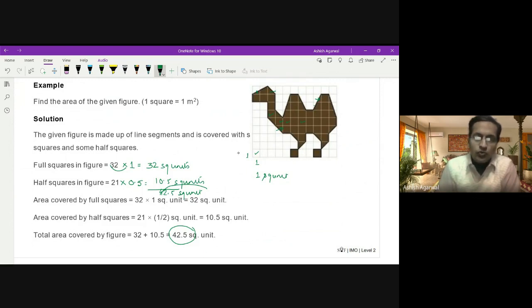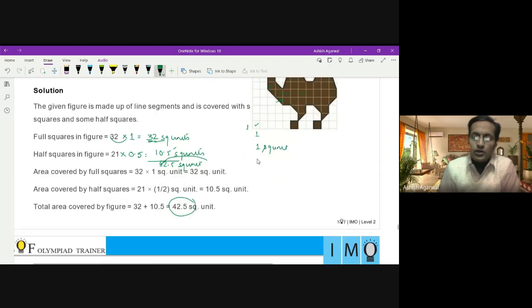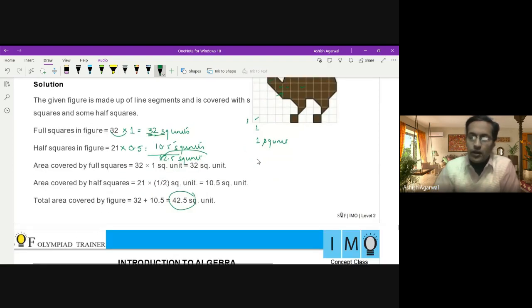So area of one square is one square unit, so area of 32 squares will be 32 square units. And I have 21 half squares, so 21 into 0.5 will give me 10.5. So when I add all these up, 32 and 10.5, the area will come out to be approximately 42.5 square units.